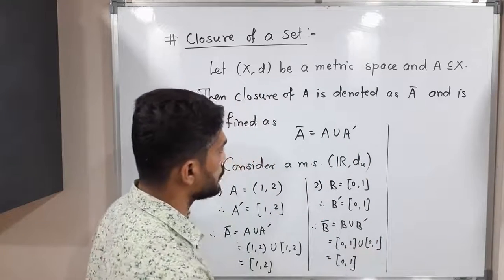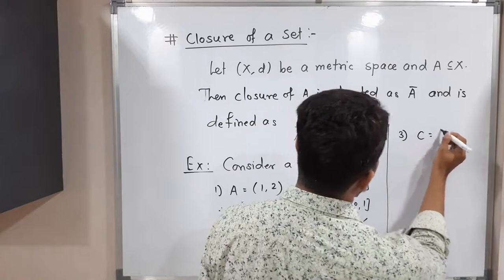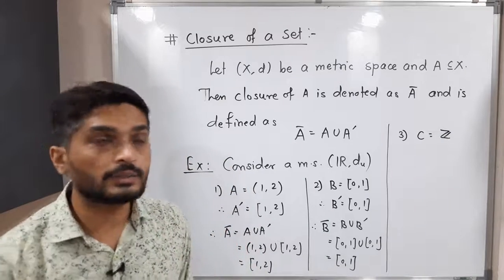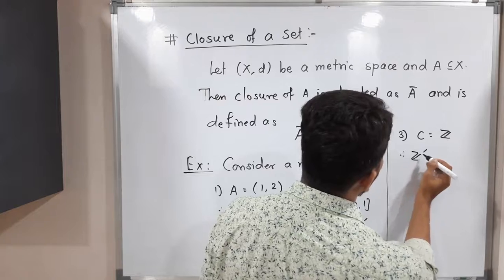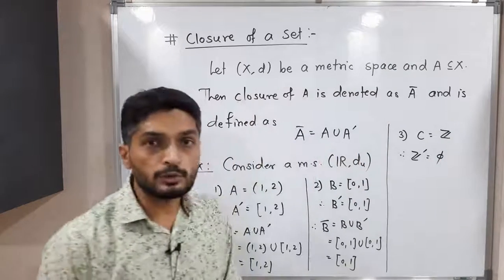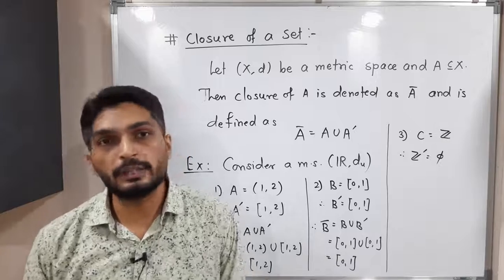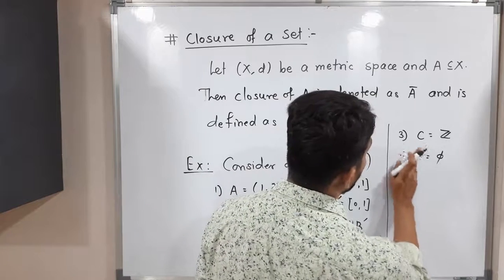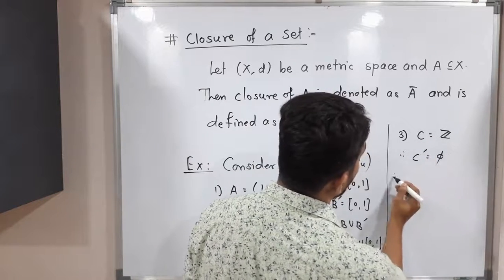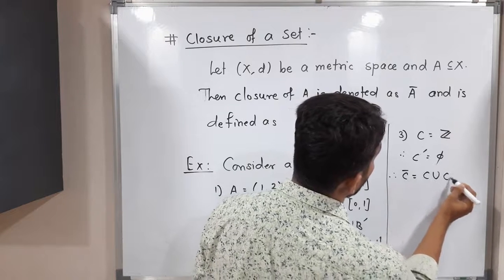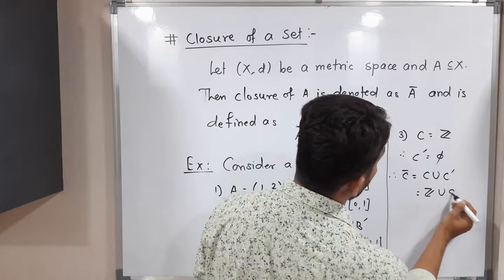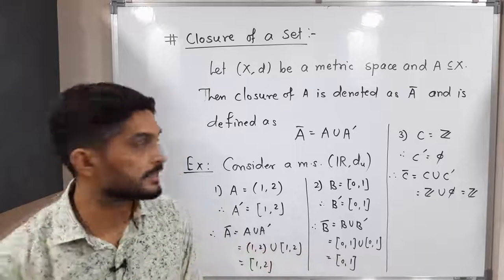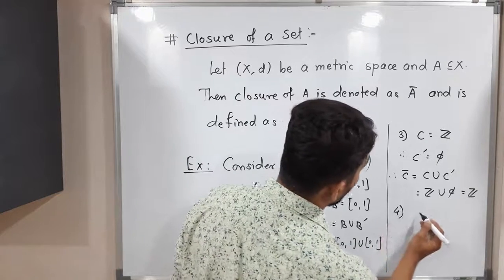Third example: C = ℤ, the set of all integers. In the previous video we already found that ℤ has no limit point in ℝ under the usual metric. Therefore C' is the empty set ∅. So C̄ = C ∪ C' = ℤ ∪ ∅ = ℤ, since taking the union with the empty set gives back the original set.